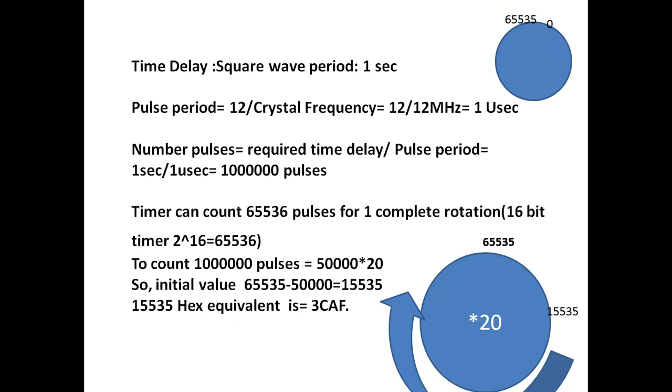For that formula is, pulse period is equal to 12 divided by crystal frequency. If you are working with 12 megahertz, the pulse duration is 1 microsecond. If you are working with other frequencies, like 24 megahertz, time duration is 0.5 seconds. If you are increasing your frequency, then pulse period will decrease.